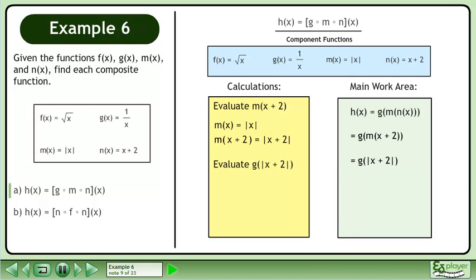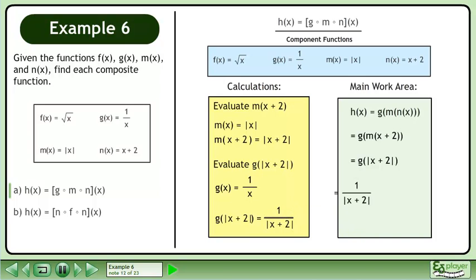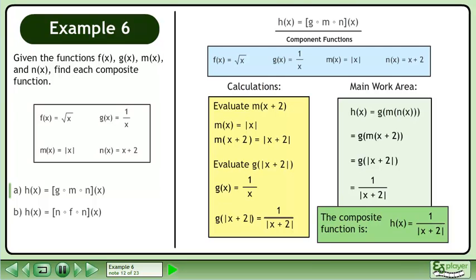Before we can continue, we need to evaluate g at the absolute value of x plus 2. We know that g equals 1 over x. So g at the absolute value of x plus 2 equals 1 over the absolute value of x plus 2. The composite function is h equals 1 over the absolute value of x plus 2.